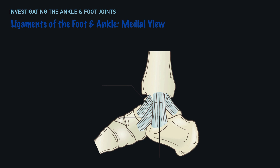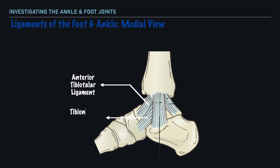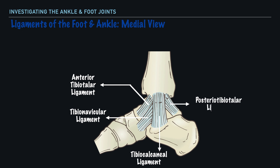Next, let's look at the medial view of the ankle, where we'll place our attention on the deltoid ligaments. This collection of ligaments is likely to become injured if an individual sustains an eversion ankle sprain, which in general is far less common than inversion ankle sprains. Although we may think of the term 'deltoid' as being associated with the number three, we have four ligaments in this case: the anterior tibiotalar ligament, the tibionavicular ligament, the tibiocalcaneal ligament, and the posterior tibiotalar ligament. As mentioned earlier, the names of these ligaments indicate their location and the bony structures they attach to.